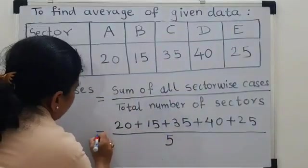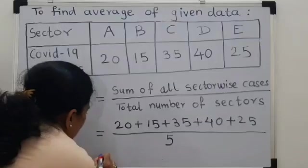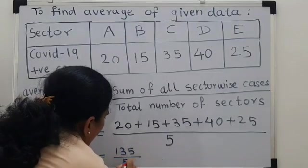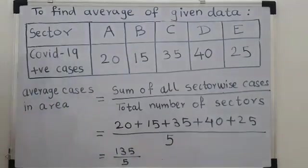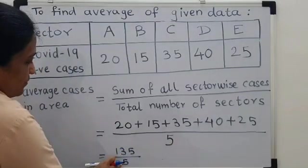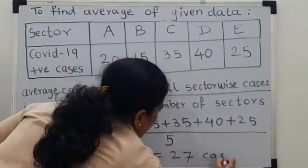So, upon 5. If I add these numbers, I get 135 upon 5. Means, I have to divide 135 by 5 which gives me 27 cases.